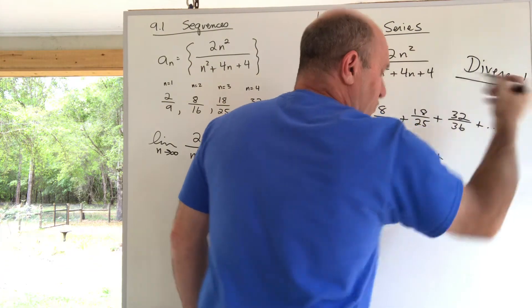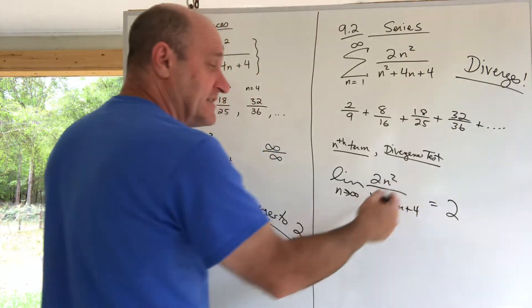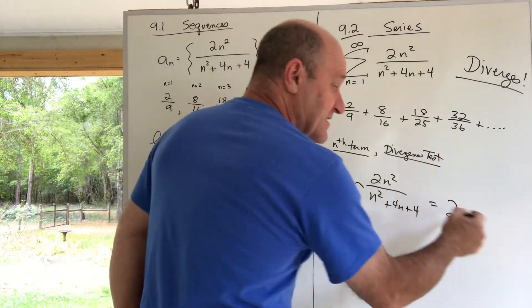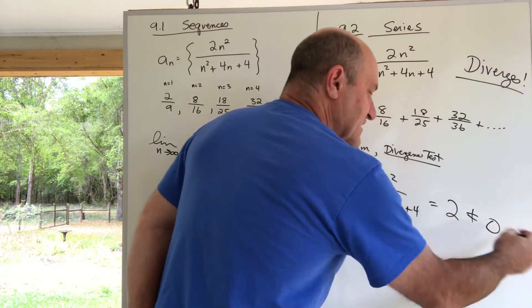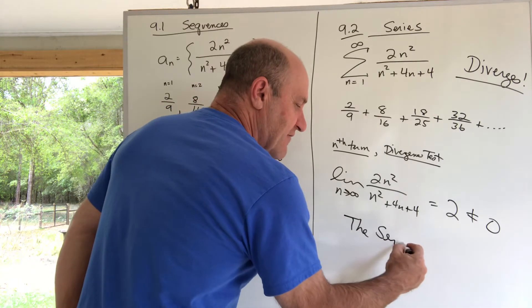The rule says that the nth term test, or the divergence test, says that when you take the limit of the nth term and it's not zero - 2 is not zero - if it's not zero, the series diverges.